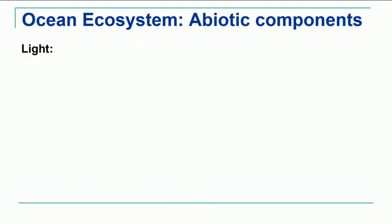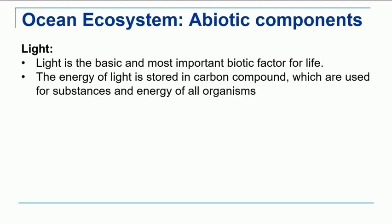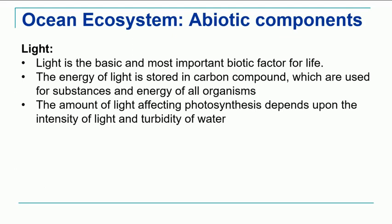Now let's study the abiotic components of the ocean ecosystem. The first important abiotic component is light. Sunlight is the basic and most important factor because the energy of light is stored in carbon compounds — whatever sunlight is received by oceanic plants is converted into food in the form of carbon compounds like glucose. It plays a very important role in photosynthesis, and the intensity of light and turbidity of water are important because turbid water reduces light penetration into the ocean.